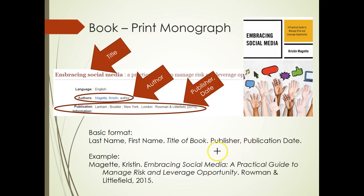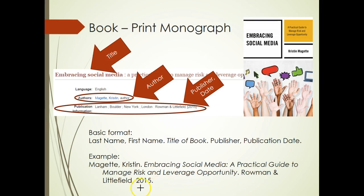We'll begin by citing a print monograph, which is a book authored on a single specific subject. In the example, I have followed the basic format, listing the book author last name first, italicizing the title with proper capitalization, and stating the publisher and date of publication.